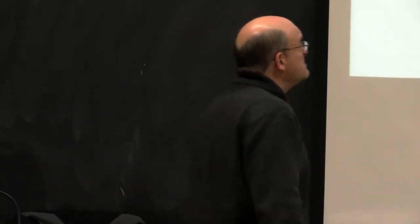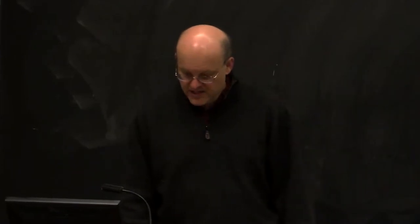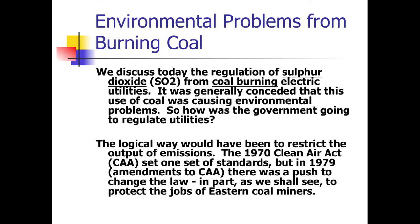Pennsylvania was a big producer of acid rain. Starting in the 1970s, people said this is a problem. This comes from burning coal — it's generally conceded that burning coal creates sulfur dioxide, and this is bad.